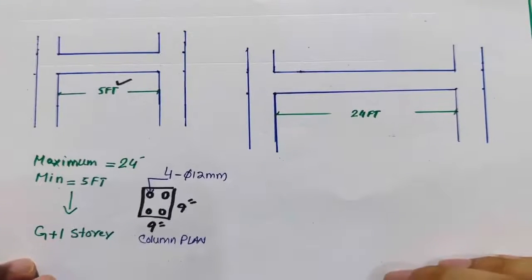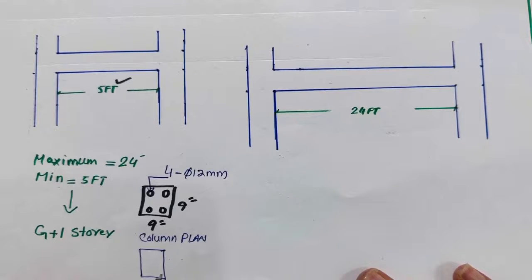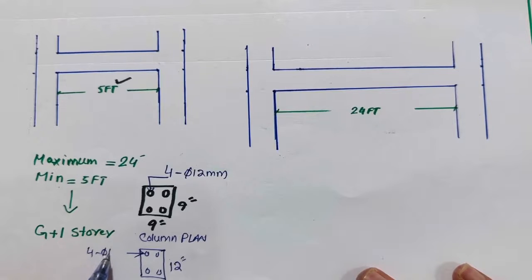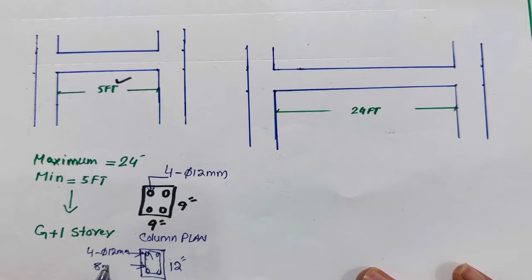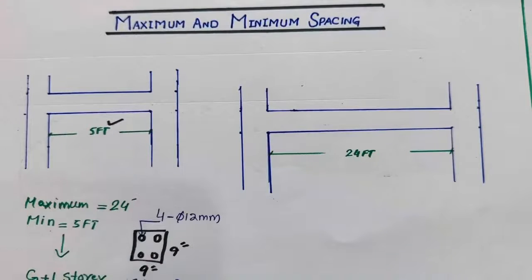Next, what should be the size of the beam for this span? The beam size you can keep at nine by twelve inches, with four numbers of bars and the same diameter — four bars, 12 millimeters. We are also using stirrups; the stirrup diameter should be eight millimeters with a spacing of six inches center to center. These are the details for the beam if the span is minimum, up to five feet.